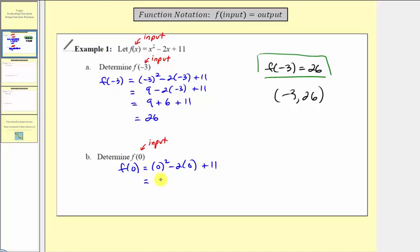Simplifying, zero squared is zero, negative two times zero is zero, and then we have plus 11. So f(0) equals 11. This tells us when the input is zero, the output is 11, or the function value f(0) equals 11.